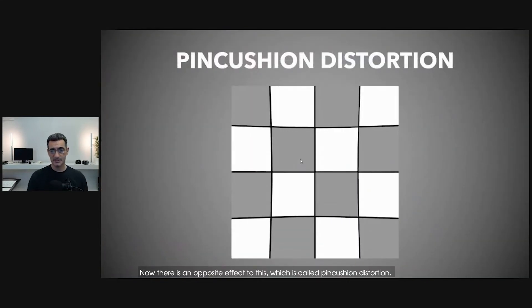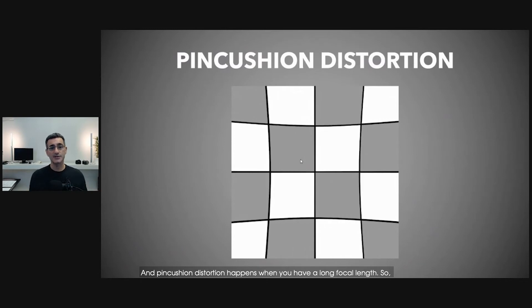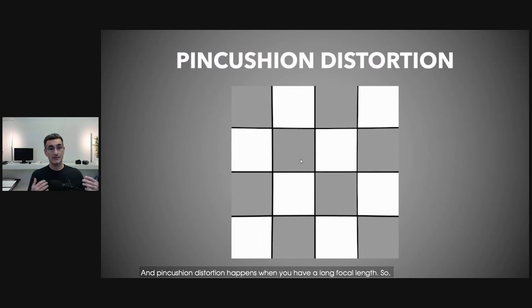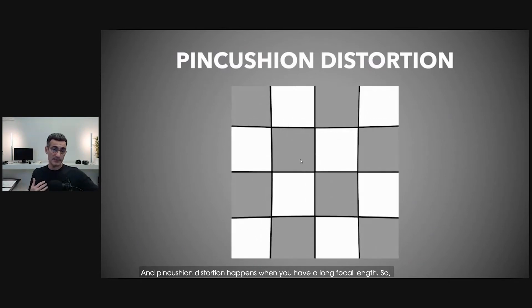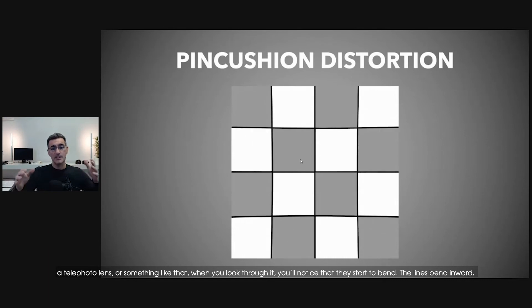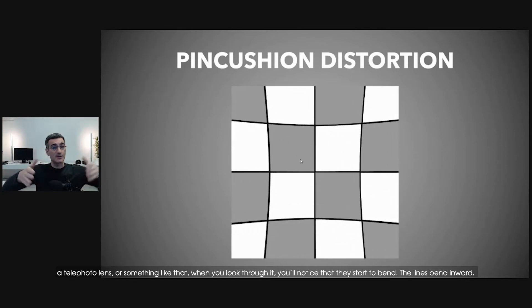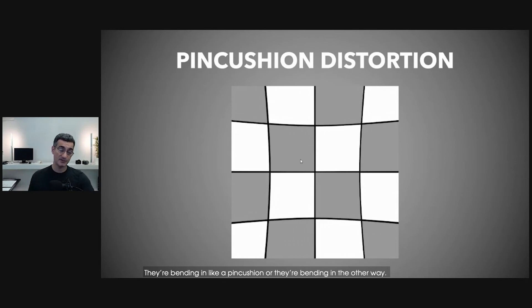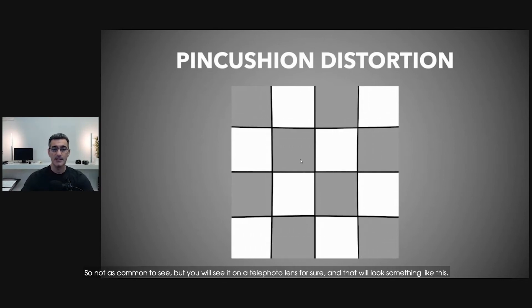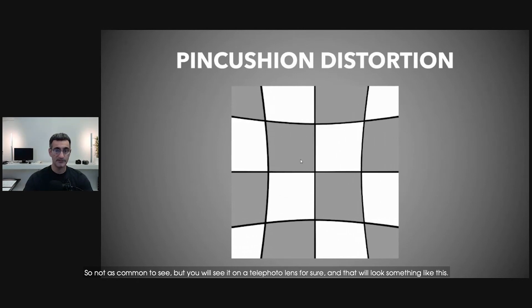Now there is an opposite effect to this, which is called pin cushion distortion. Pin cushion distortion happens when you have a long focal length — so a telephoto lens or something like that. When you look through it, you'll notice that the lines bend inward, bending in like a pin cushion, bending in the other way. Not as common to see, but you will see it on a telephoto lens for sure.